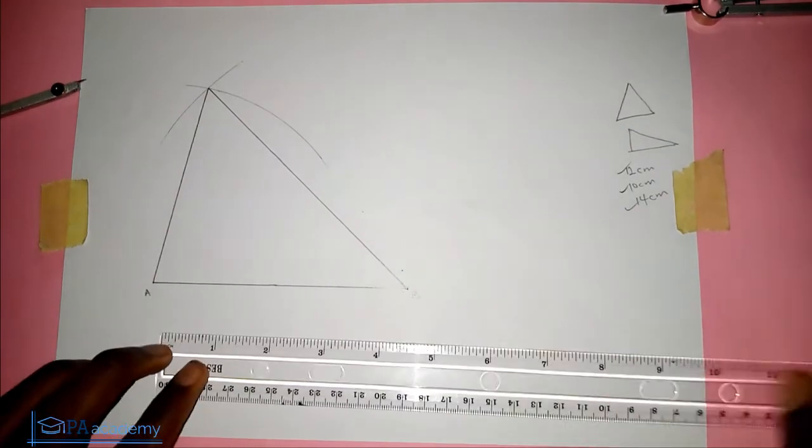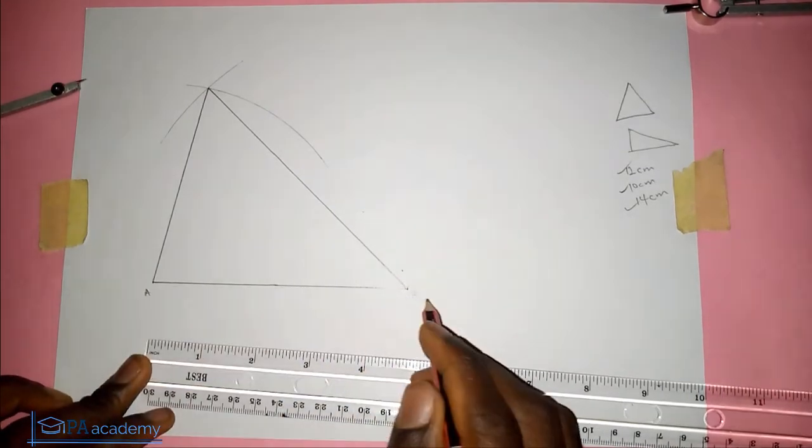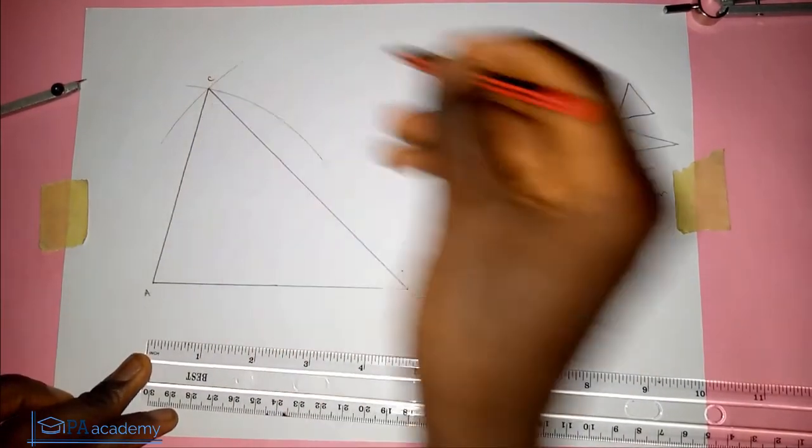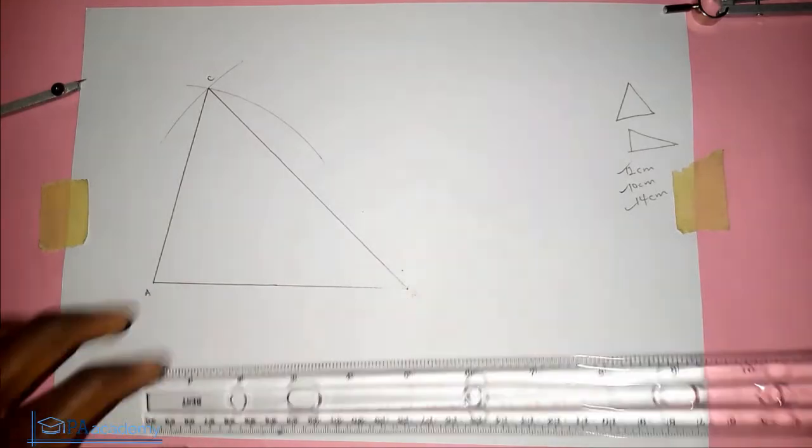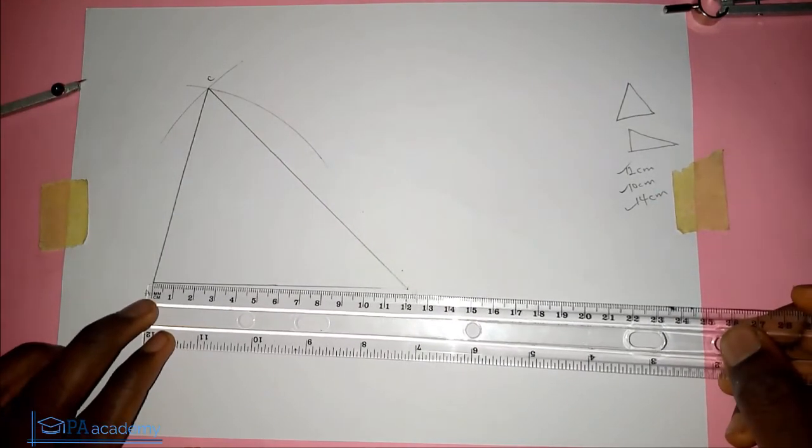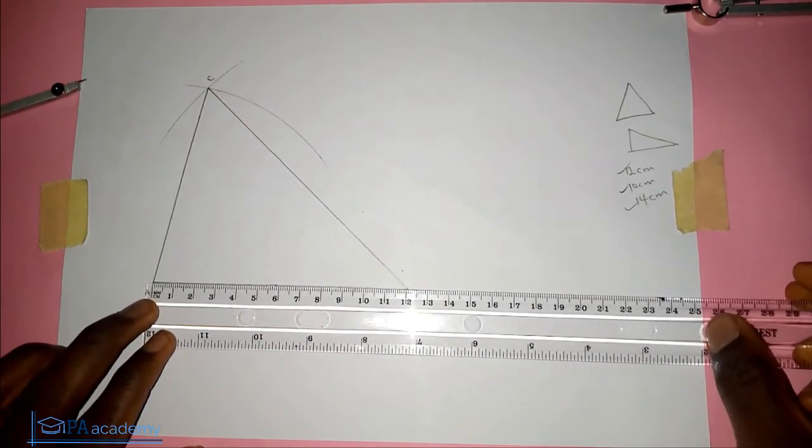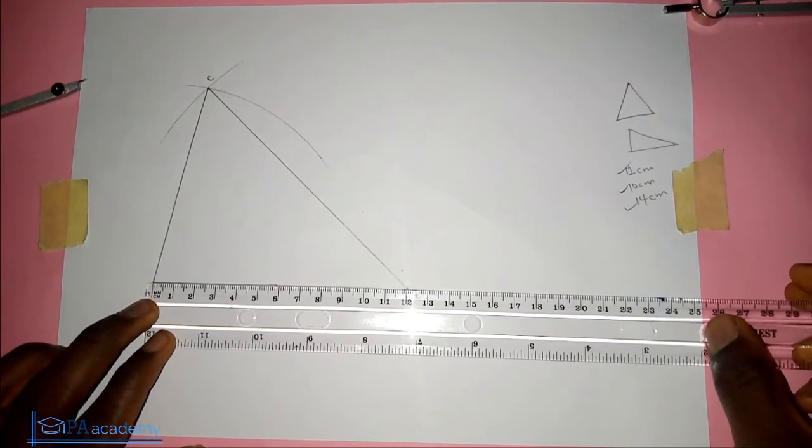Now let's, just to confirm, let's call this point C. Don't forget this point A to B, we measured it to be 12 cm. So you can see, this is 12 cm.